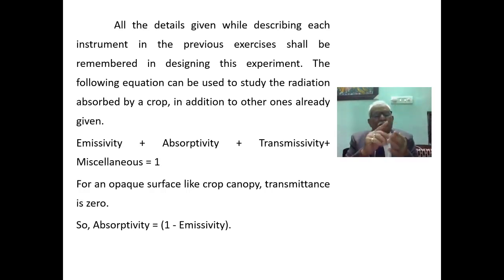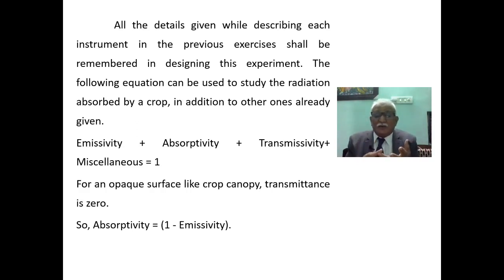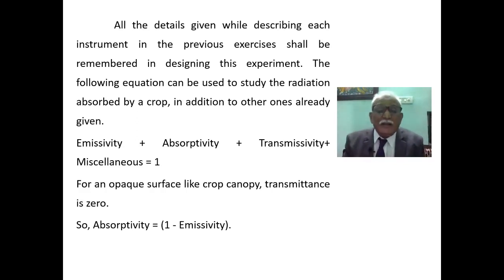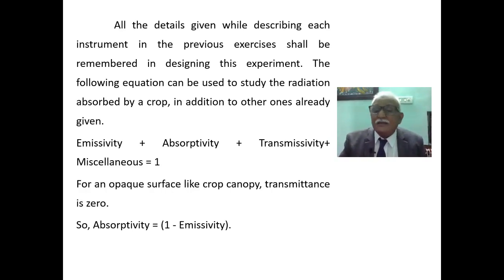Net radiation Rn is equal to latent heat flux plus ground heat flux plus sensible heat flux plus oscillation. For an opaque surface like a crop canopy, the transmittance is usually taken as 0, so absorptivity becomes just 1 minus emissivity.